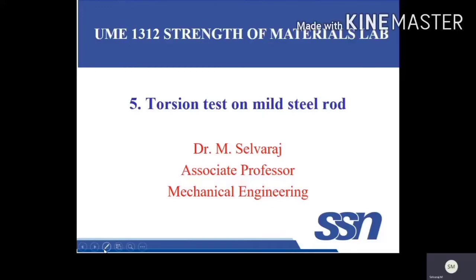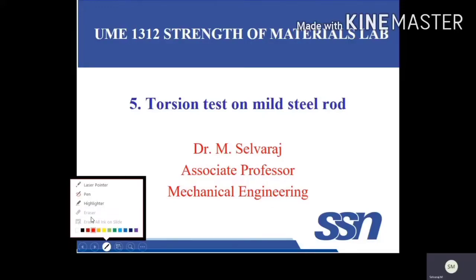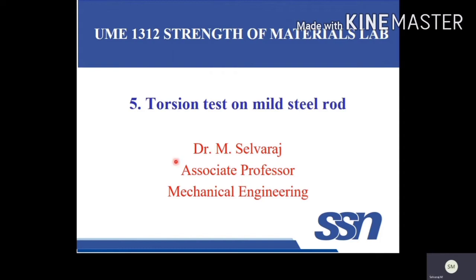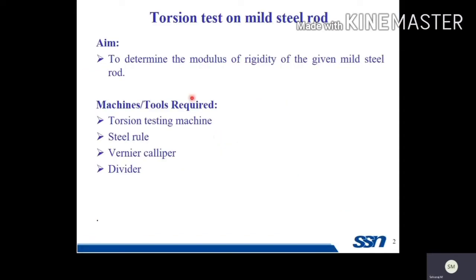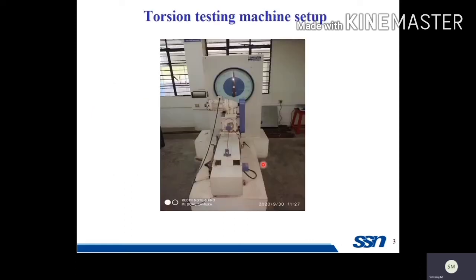Torsion test on mild steel rod. The objective of this experiment is to find the modulus of rigidity of the given mild steel rod. This is the machine used for finding the modulus of rigidity.